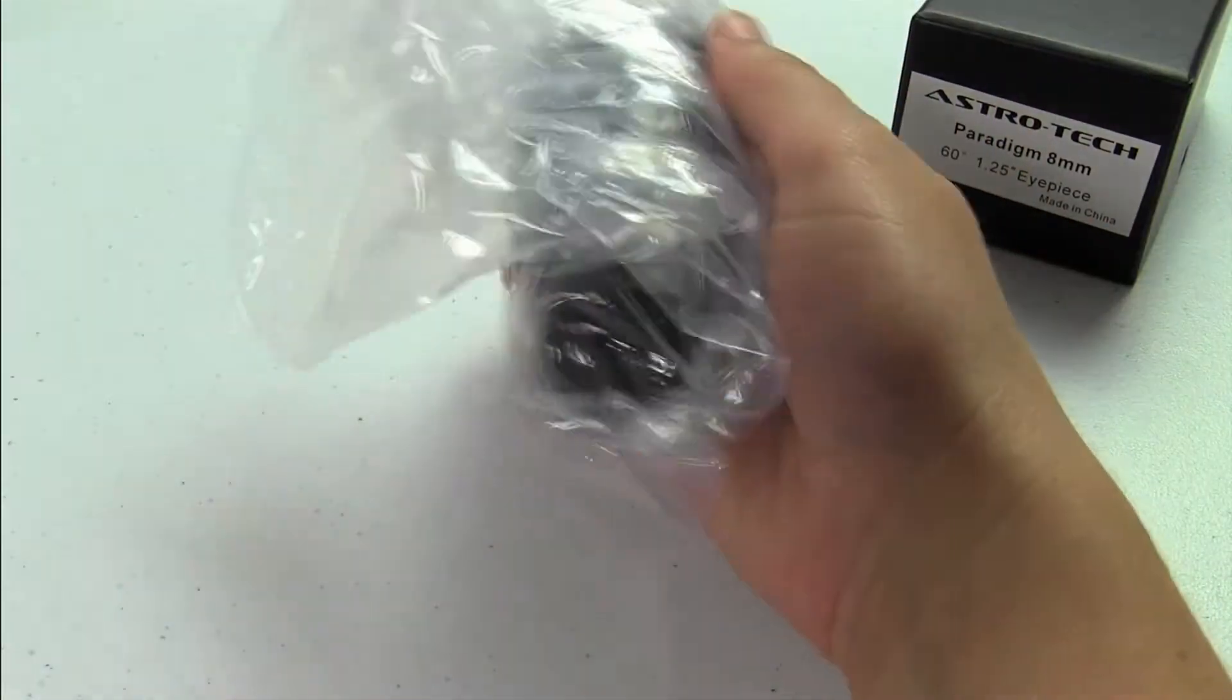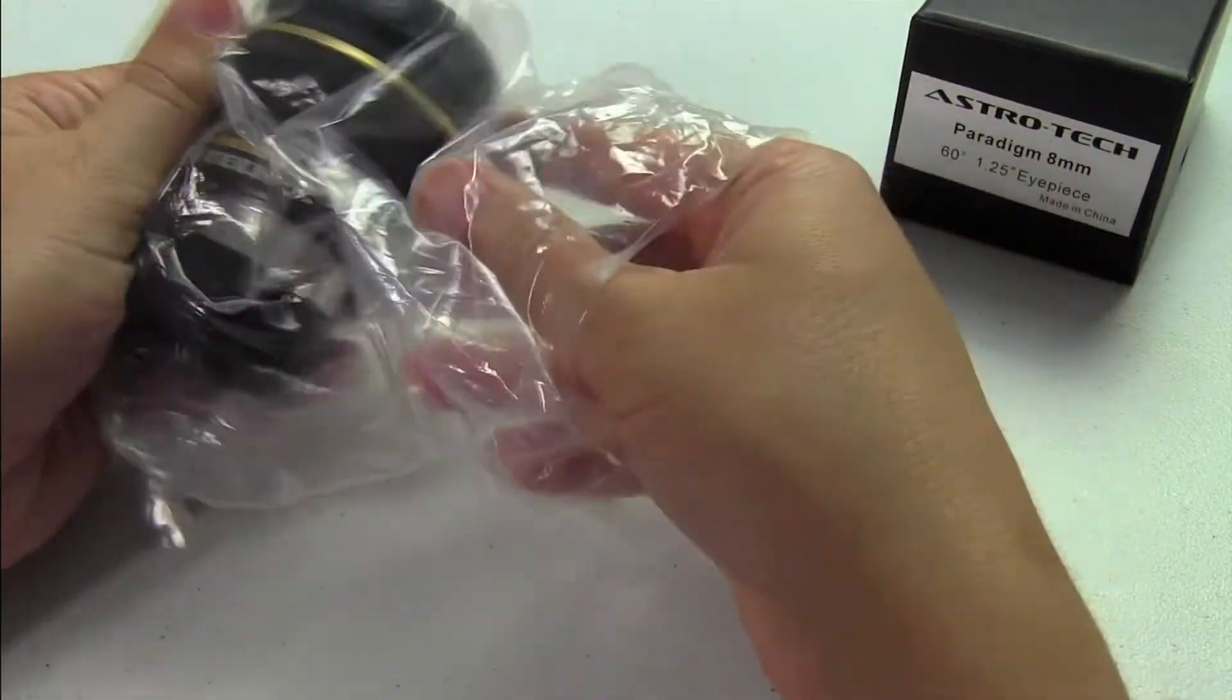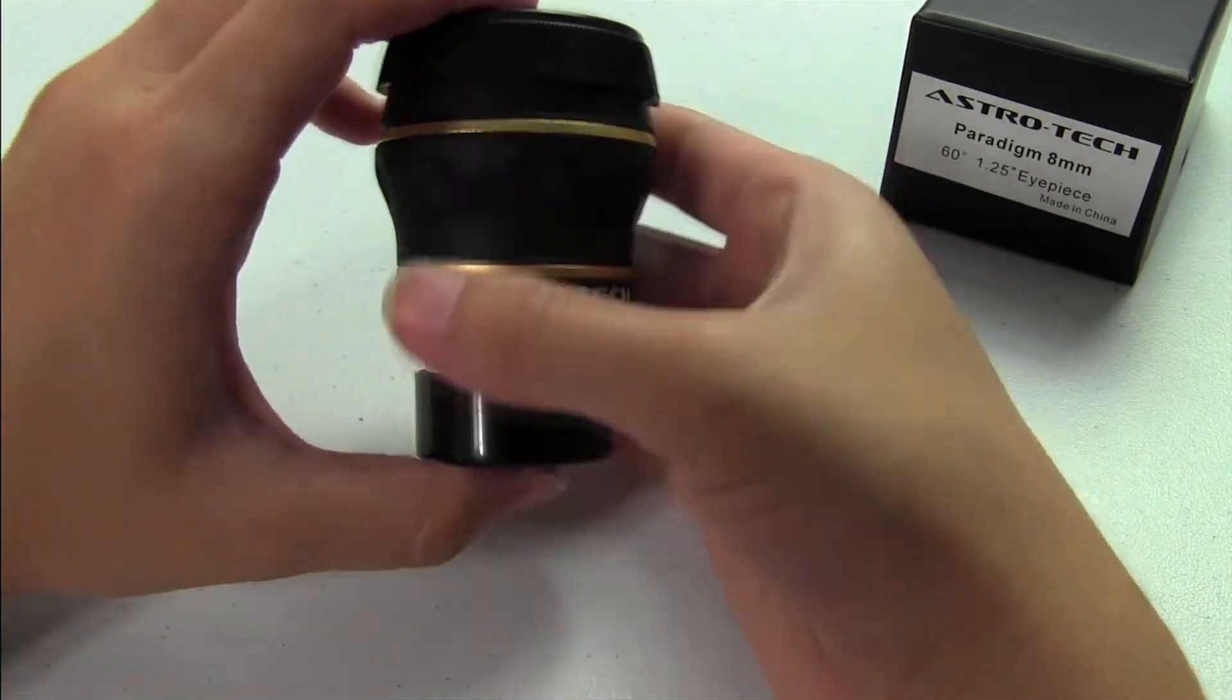The Paradigm Eyepiece has a 60 degree field of view, 13mm of eye relief, and weighs in at 6.4 ounces.